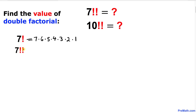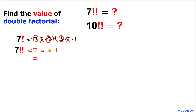Now let's talk about the double factorial of 7. We're going to start off with 7 first, and then we're going to skip 6. The next number is going to be 5, then we skip one number, then 3, skip again, and then times 1. If we multiply 7 times 5 times 3 times 1, we get 105, and that is our answer.